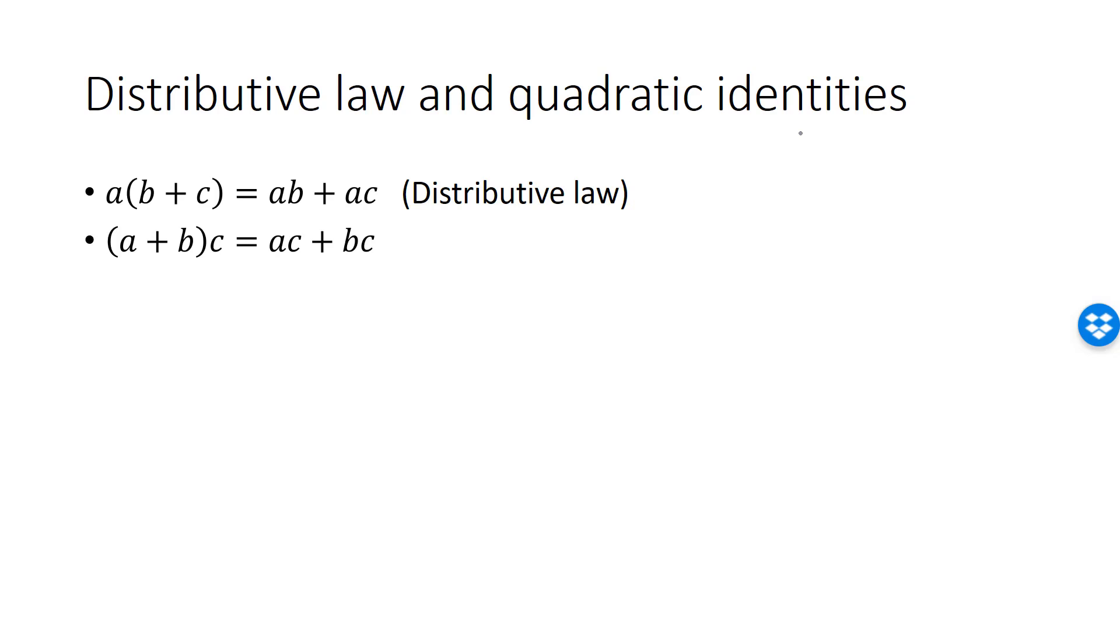This rule is very easy to prove from the axioms of the real number system. We know that, by the commutative property of multiplication, this is the same thing as C times A plus B. From the distributive law, it follows that this is C times A plus C times B.